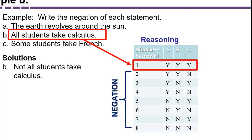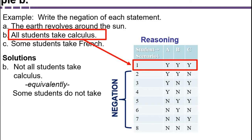We usually choose to say 'some students do not take calculus.' In logic, the word 'some' is equivalent to the phrase 'at least one.' In each of the scenarios that represent our negation, there's at least one student — maybe more — who's not taking calculus.